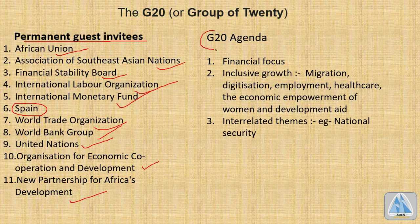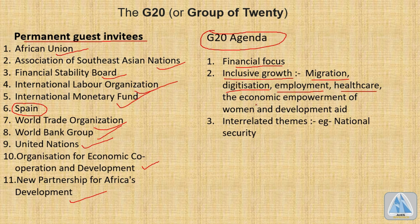G20 has expanded its agenda beyond financial stability to include inclusive growth topics such as migration, digitization, employment, healthcare, economic empowerment of women, and development aid. There are also integrated themes between countries, such as national security. This covers the full scope of what G20 addresses today.